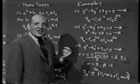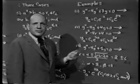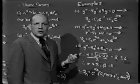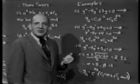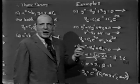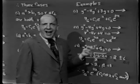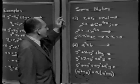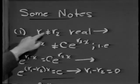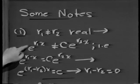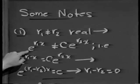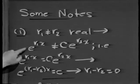From this point on, the rest is drill. But I'll give you some supplementary notes as to why these things work out. First, in Case 1 where r1 is not equal to r2 and both are real, e to the r1x and e to the r2x are both real solutions, and since one cannot be a constant multiple of the other, their linear combination must be the general solution. That's what we saw last time.